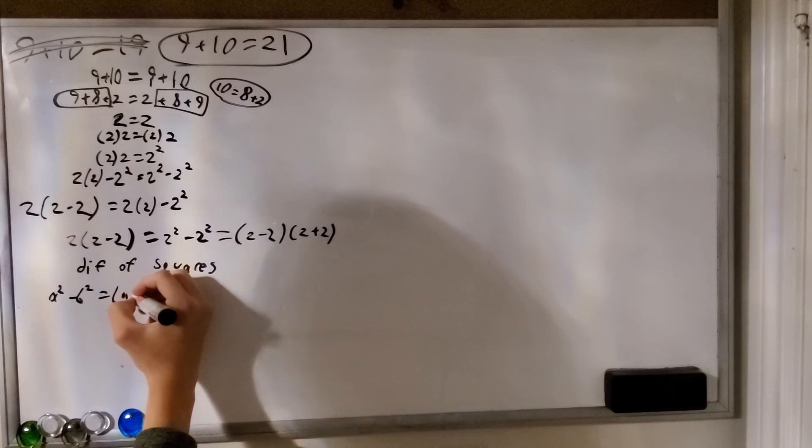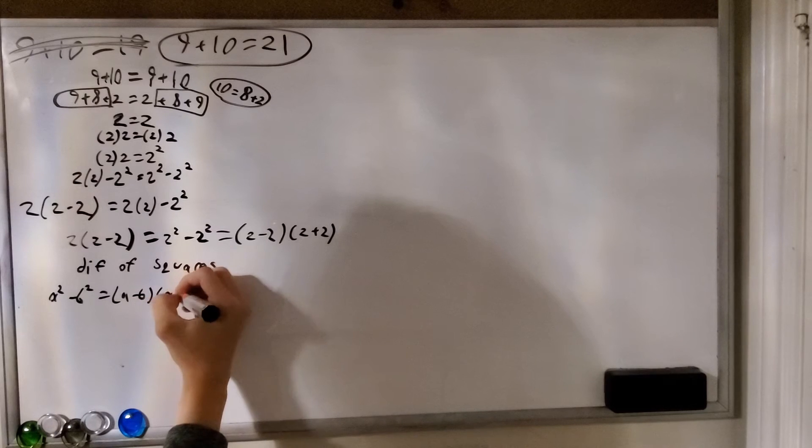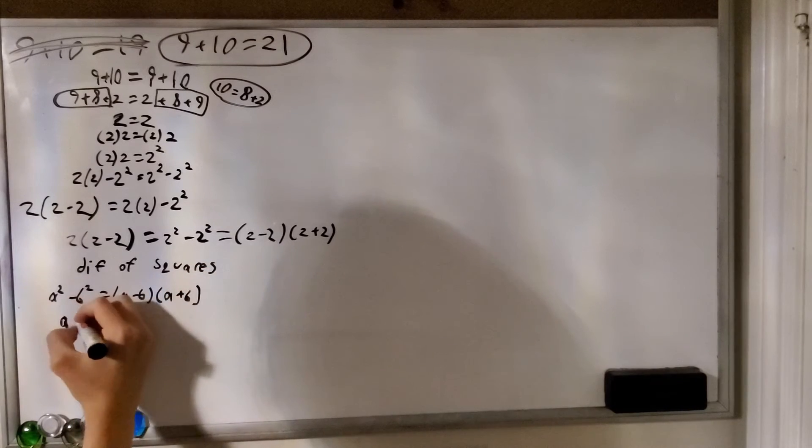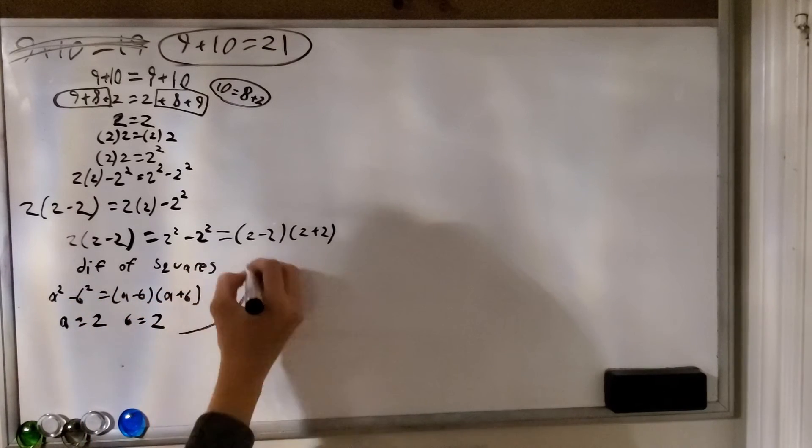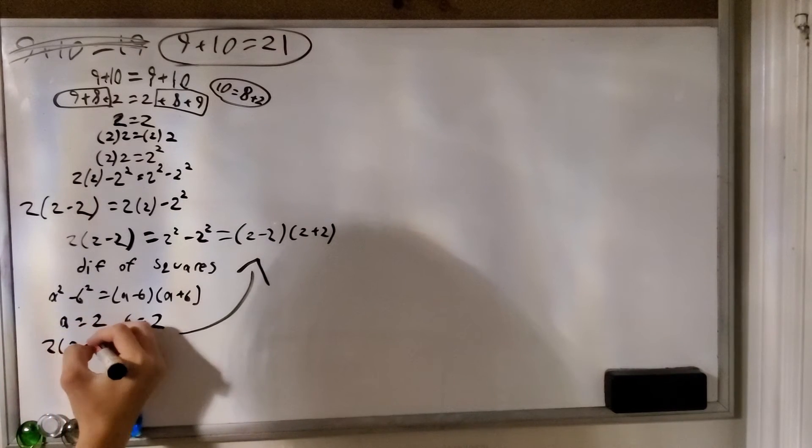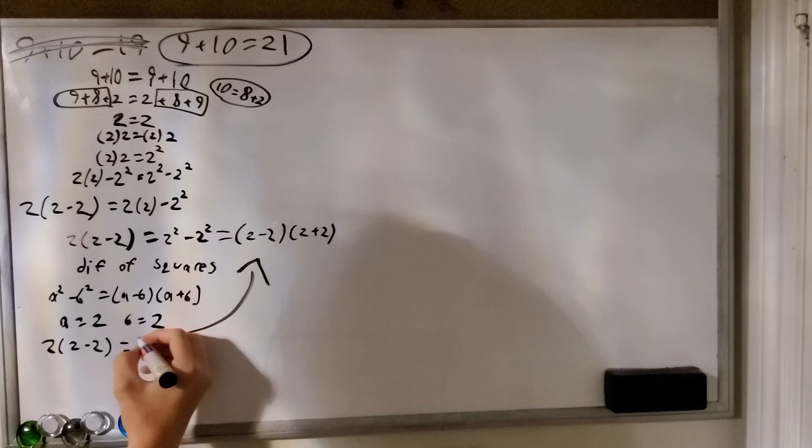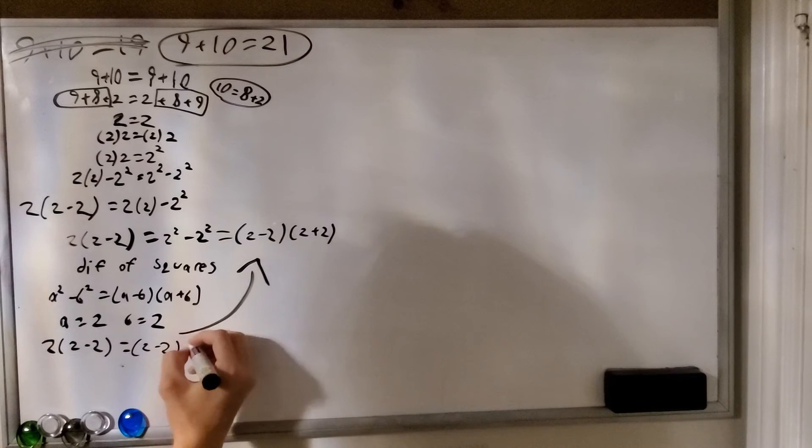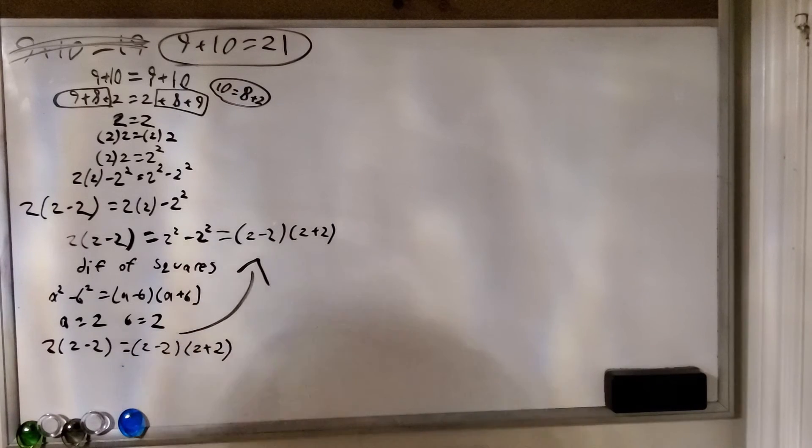And this basically says that the difference of any two numbers taken to the power of 2, a and b are our numbers, is equal to a minus b times a plus b. And in this case, a is equal to 2 and b is also equal to 2. So all this works out to 2 times 2 minus 2 equaling 2 minus 2 times 2 plus 2. Again, if you don't believe me, check your calculator.